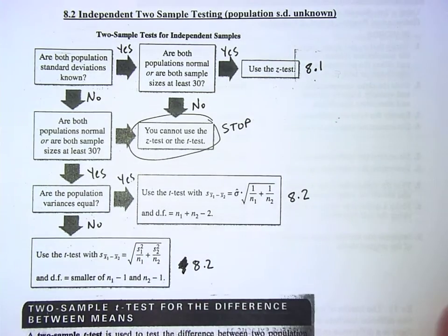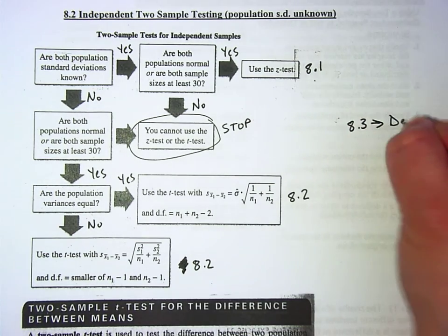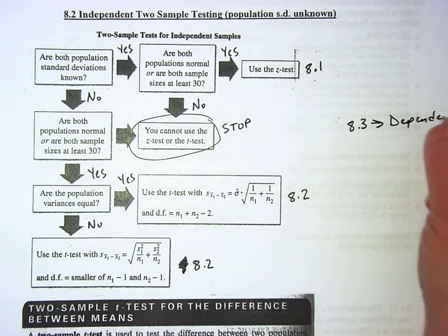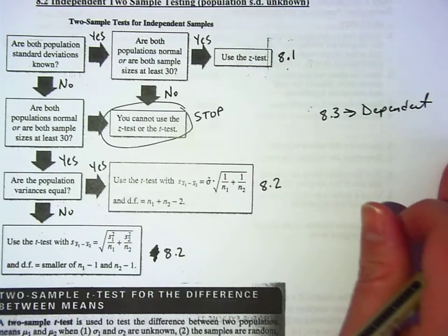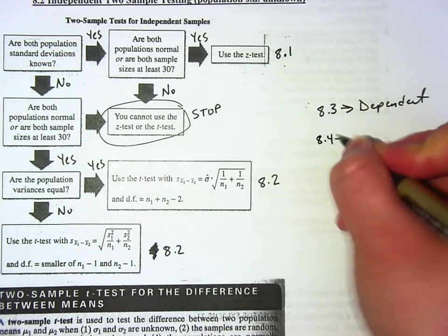We're going to practice them both today. 8.3 is for dependent samples, like paired samples. And 8.4 is for proportions.